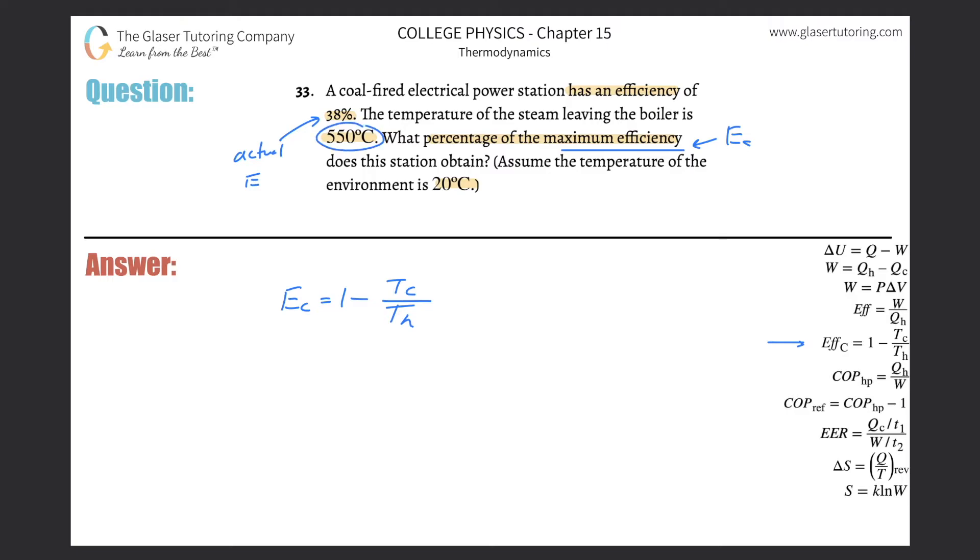So that's essentially the temperature going into this engine of sorts, and this is the temperature then that's leaving that engine. So this is the temperature of the hot reservoir, temperature of the cold reservoir. So now we can simply calculate the maximum theoretical efficiency here.